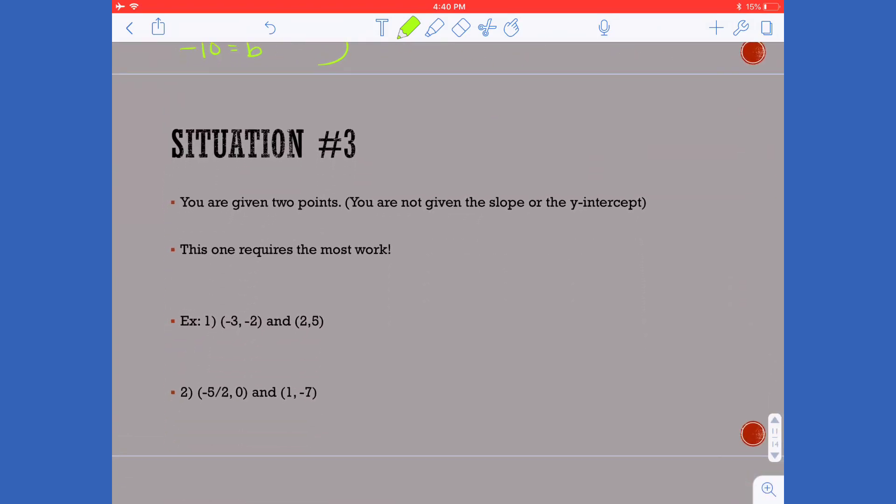Situation number 3 is when you are given 2 points but neither is the slope or the y-intercept. So it requires the most work because you have to begin by finding your slope and then you'll look for your y-intercept value.